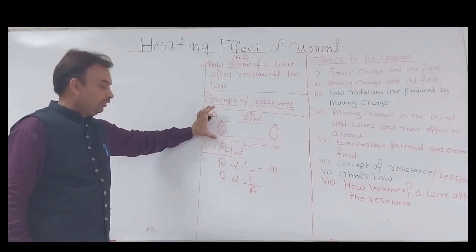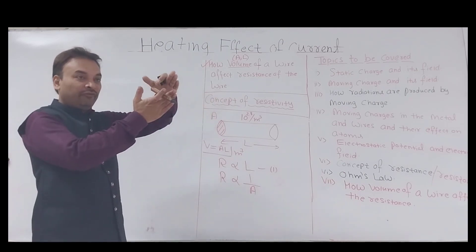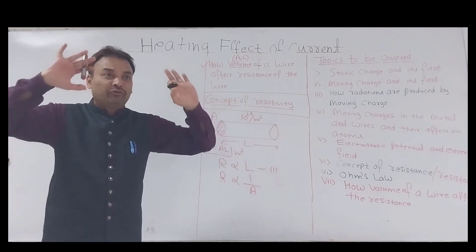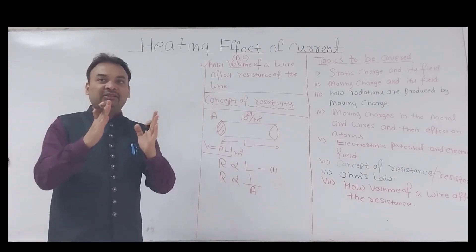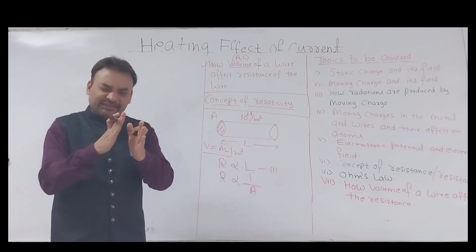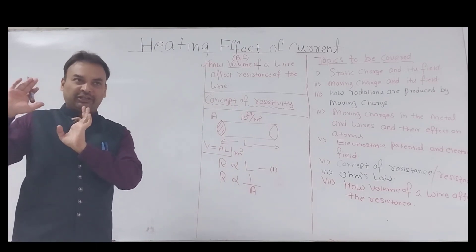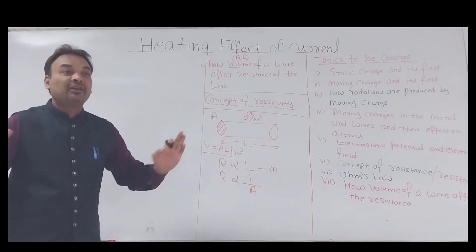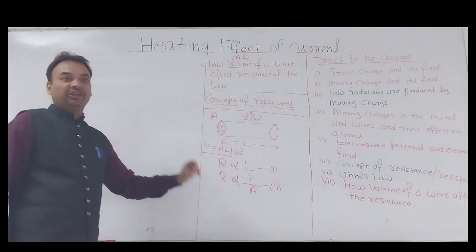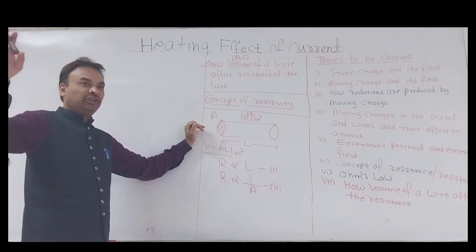Resistance is inversely proportional to the cross-sectional area. If we increase the diameter — the cross-sectional area — electrons get more space to move. Think of a wide road: traffic flows easily. But on a narrow, congested road, vehicles collide and touch each other. Similarly, a wider conductor means easier electron flow and less resistance; a narrower conductor means more congestion and more resistance.